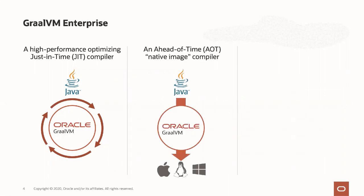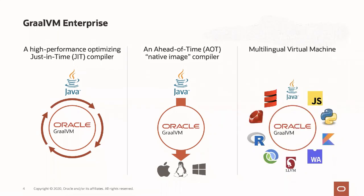The second area, one that gets a lot of attention, is our ahead-of-time support in Native Image. We can take Java applications and generate native machine executables for different platforms, which I'll dig into today. And the third thing we're quite well known for is being able to run multiple languages that are not native to the JVM — languages that typically run on other runtimes, such as Ruby and JavaScript.